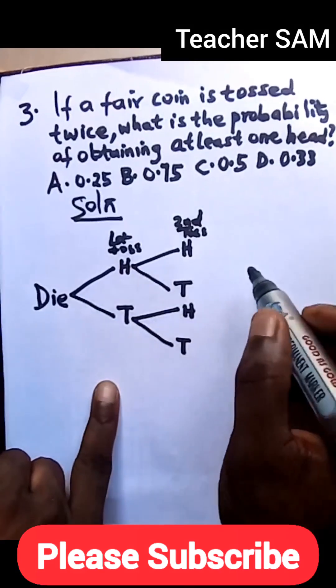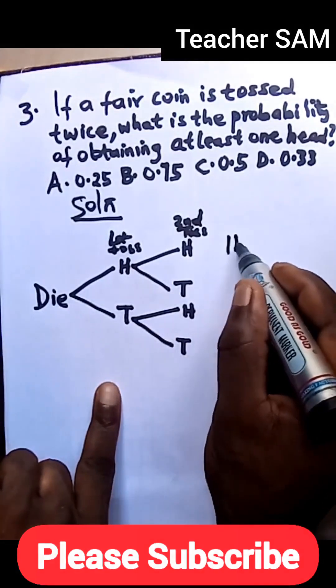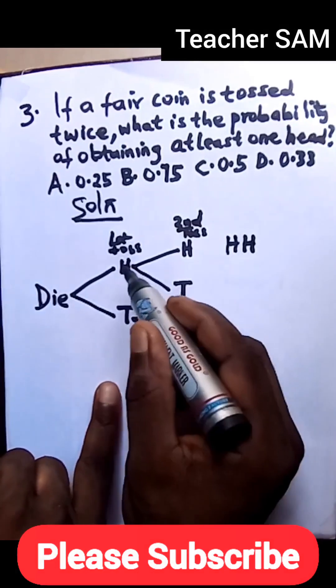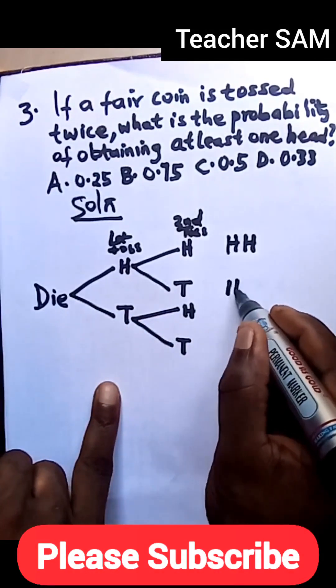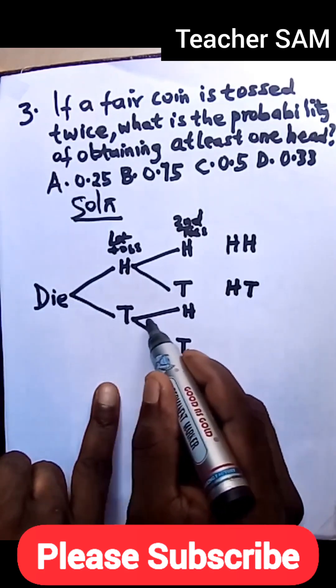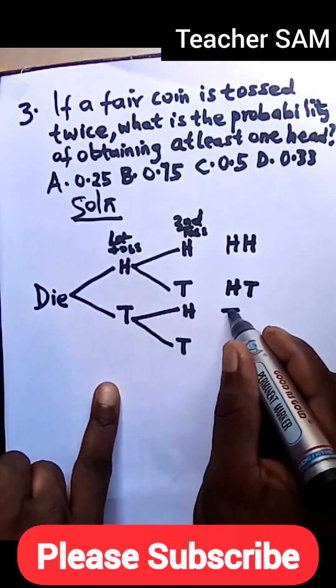Now if we have to pick it, so let's follow the lines. From this first line we have head-head, that is one outcome, one result. Now we follow this other line: a head and a tail.